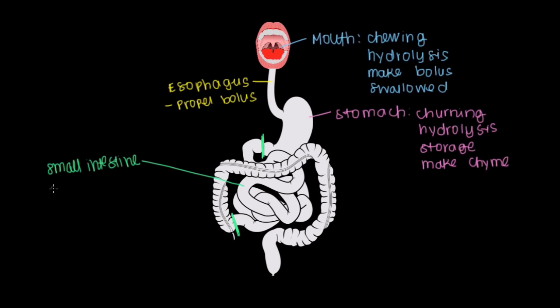There are three parts to the small intestine, and we'll talk about that in a subsequent video, but the main functions that we achieve here are hydrolysis and also the absorption of nutrients. This is kind of the first part of your GI tract where you're finally taking in some of the breakdown food products and using them for nutrition to make other products in your body.